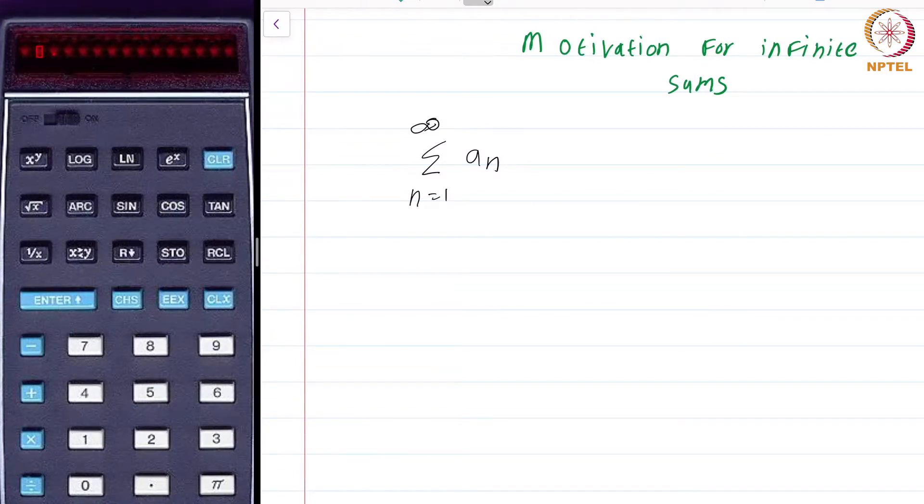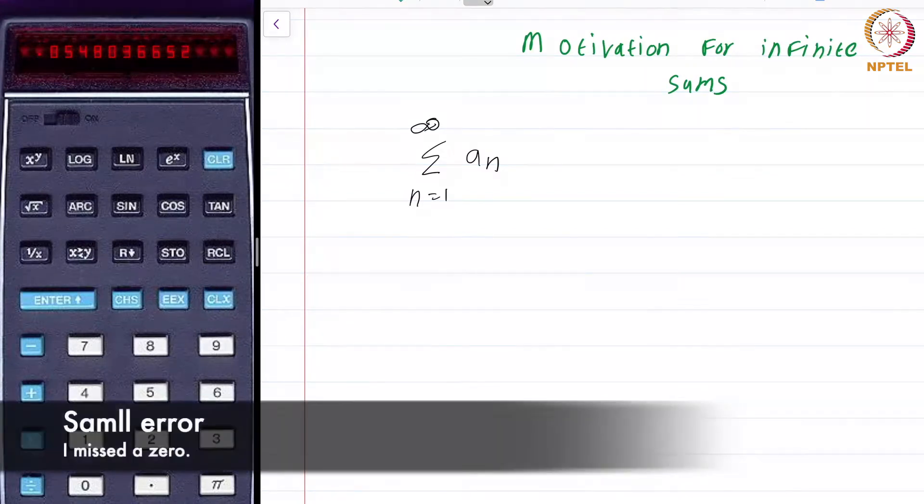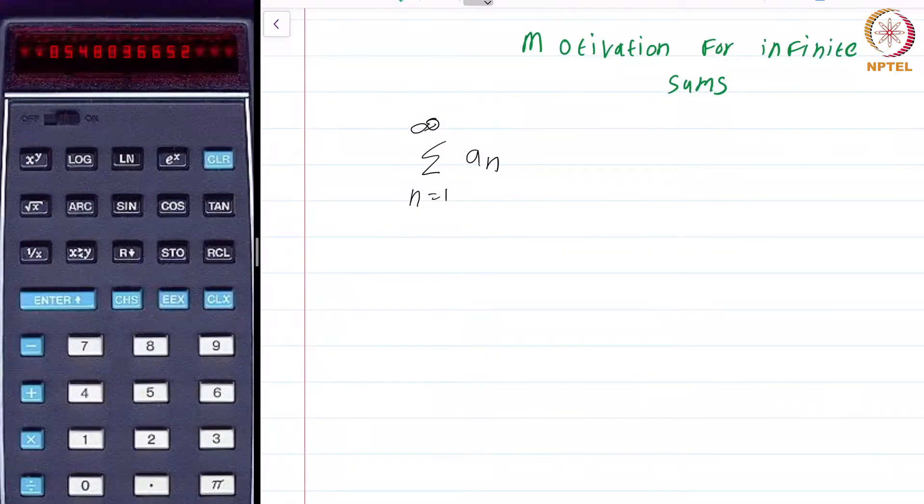Let us perform some experiments. This is a reverse Polish notation, so I will have to type 85 and press sine. I get 0.99619. Let us say I put 74 and press sine, I get 0.96126. Let me put pi and press sine, I get 0.548036652. Let me put 48 and sine, I get 0.7431448255.